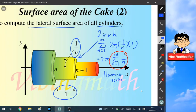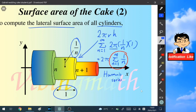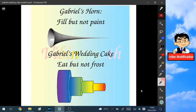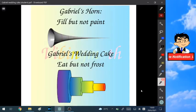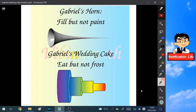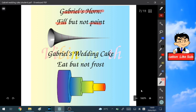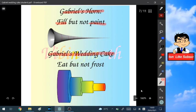So we know that the area of this wedding cake is also divergent, because it is a sum of the lateral surface area and also the ring surface area. So now we know that Gabriel's wedding cake has exactly the same property as Gabriel's horn. For Gabriel's horn, it can be filled but not painted. And for Gabriel's wedding cake, it can be eaten but not frosted.